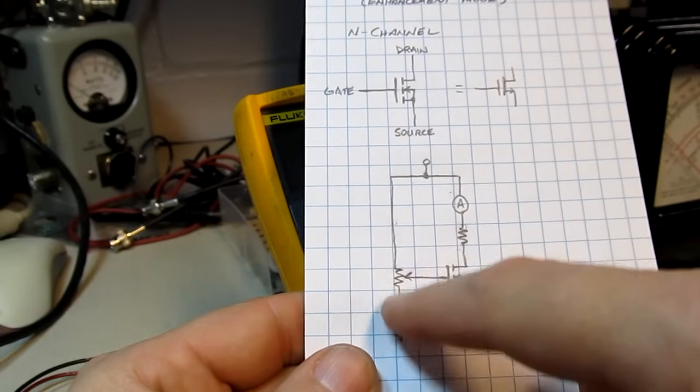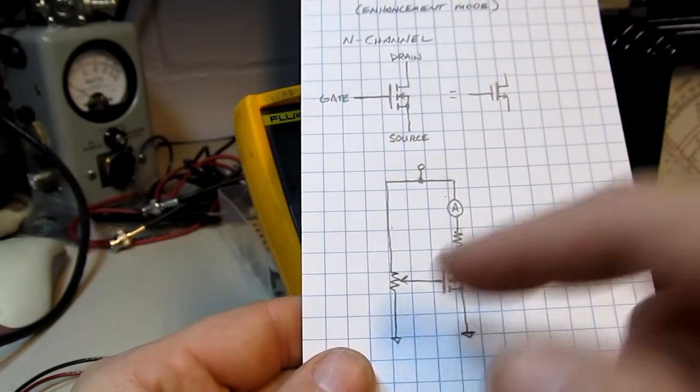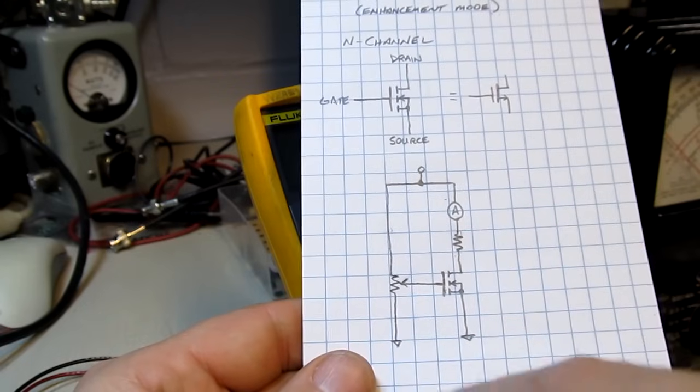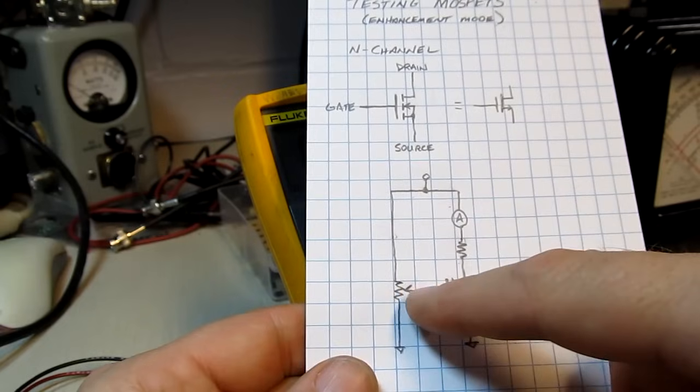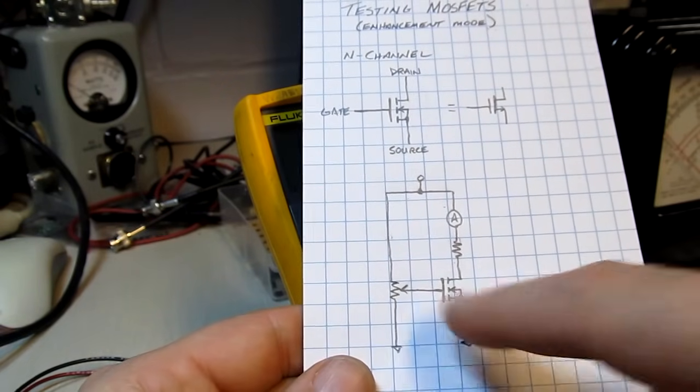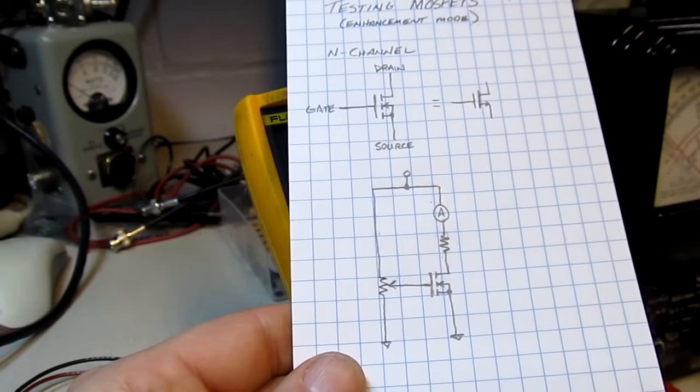And just use a potentiometer. Value really is not critical. I've got a 10k pot in there. It could be 1k. It could be a meg. It really doesn't matter. We're just going to use it as an adjustable voltage divider to drive the gate of the FET under test.